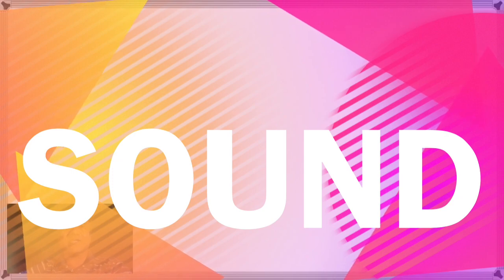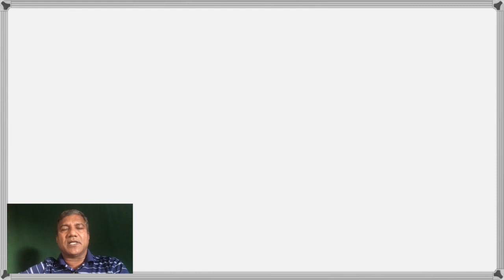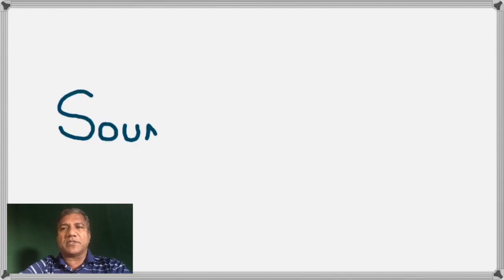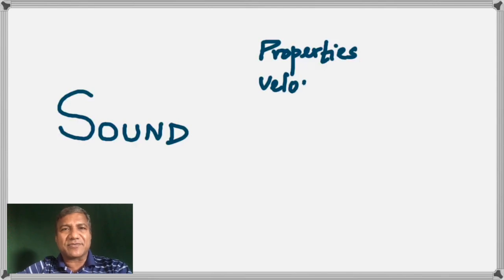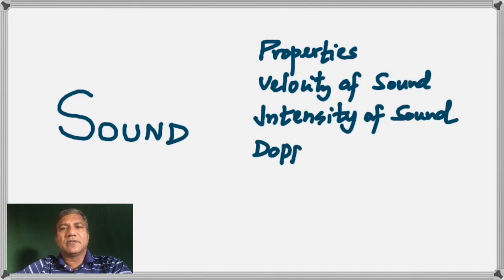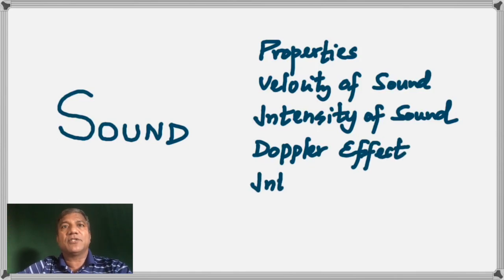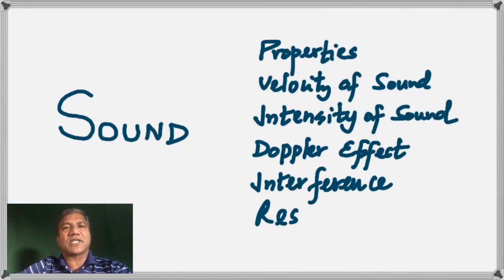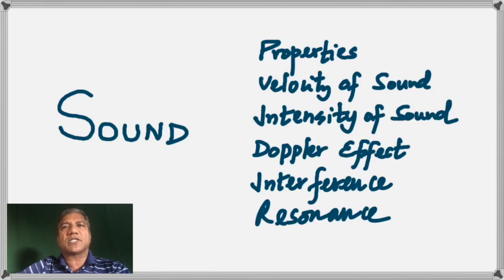Hello students, this is chapter 17: sound and how it relates to hearing. This lecture covers the various properties of sound. We'll look at how the intensity of sound is measured, the velocity of sound through different materials, the Doppler effect — which is used by police to give speeding tickets — and the interference of sound, especially resonance in pipes, chiefly with closed pipes.